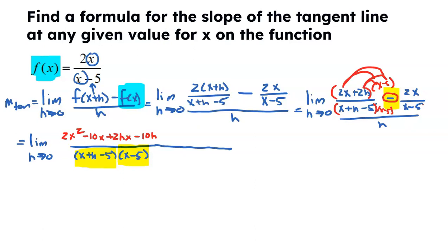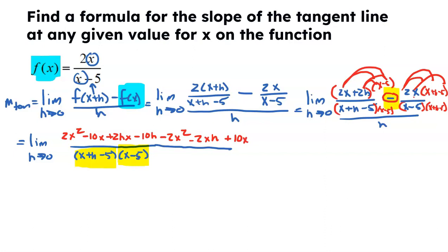Now this second fraction needs X plus H minus 5 to get the common denominator, so I multiply it by X plus H minus 5 on both numerator and denominator. But be careful — that's a negative 2X being distributed. So I get a negative 2X squared, a negative 2XH, and a positive 10X. I had to distribute there: negative 2X times X, negative 2X times H, negative 2X times negative 5. Make sure that minus sign goes with it. Instead of dividing everything by H, I'm going to multiply by the reciprocal 1 over H — that avoids a double fraction, and that's the H I'm trying to get to cancel.